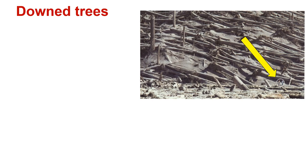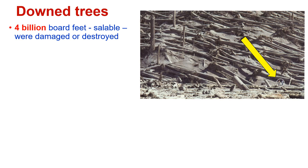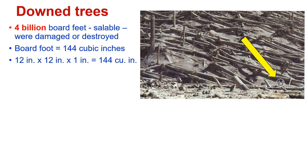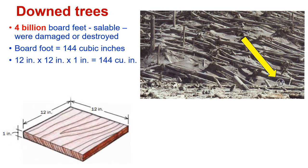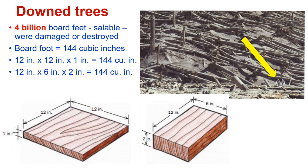Let's take a look at the downed trees. Four billion board feet were destroyed or damaged by the volcano — that could be sold. A board foot is 144 cubic inches — it could be 12 inch by 12 inch by 1 inch, which equals 144 cubic inches, or 12 inches by 6 inches by 2 inches. 25% of the destroyed trees were salvaged before they rotted. Here's a picture of them salvaging some of the trees to be made into boards.